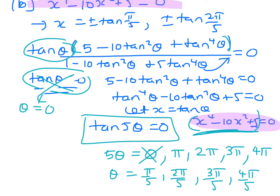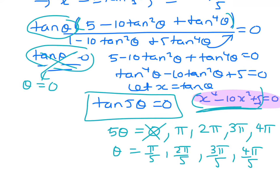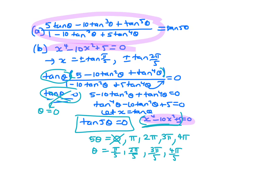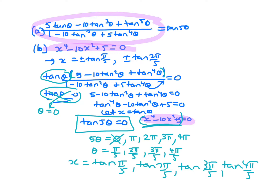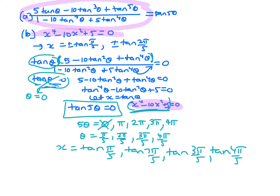The roots are x = tan(π/5), tan(7π/5), tan(3π/5), and tan(4π/5). We need to show these are equivalent to ±tan(π/5) and ±tan(2π/5).